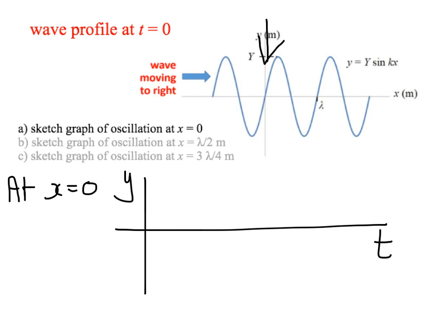Well, we know one point on the graph already because obviously at time t equals 0 and at the position where x equals 0, we can see that the displacement is equal to 0. So our graph is going to go through this point.